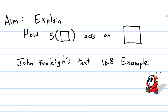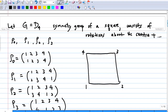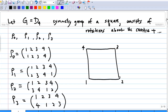This video will explain how the symmetric group of a square acts on the square, taken from John Fairline's example. First, let's recall what the symmetry group of a square is. The symmetry group of a square is usually denoted by D4. It consists of four rotations about the center of the square and four reflections.